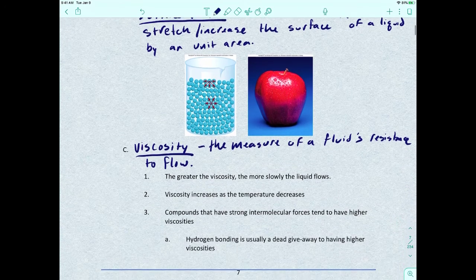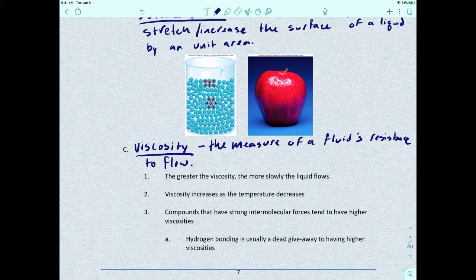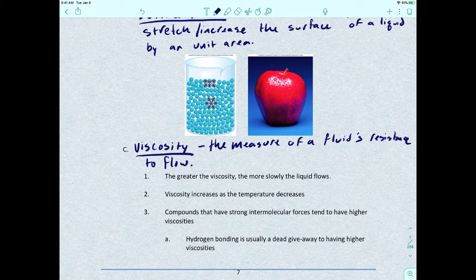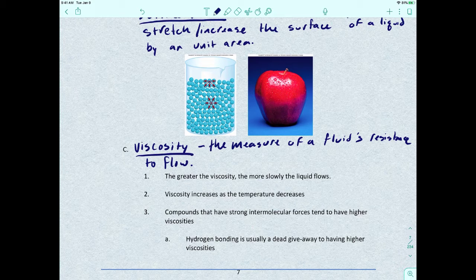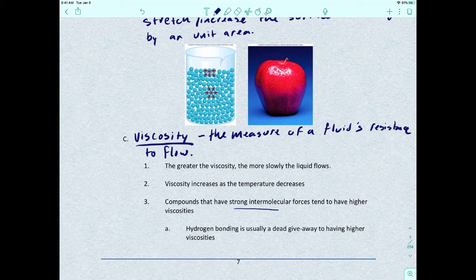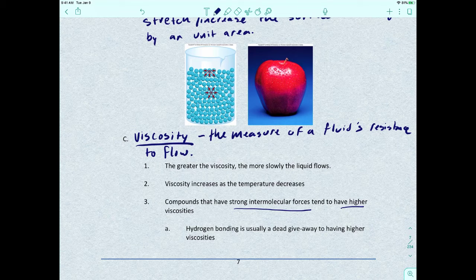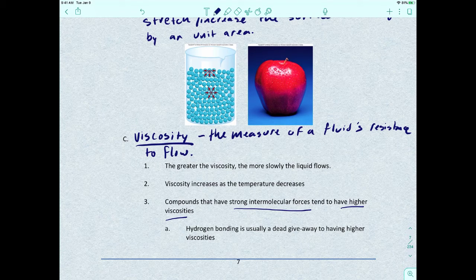The greater the viscosity, the more slowly the liquid flows. Viscosity increases as the temperature decreases. Compounds that have stronger intermolecular forces are going to have higher viscosities, so they tend to move a little bit more slowly.